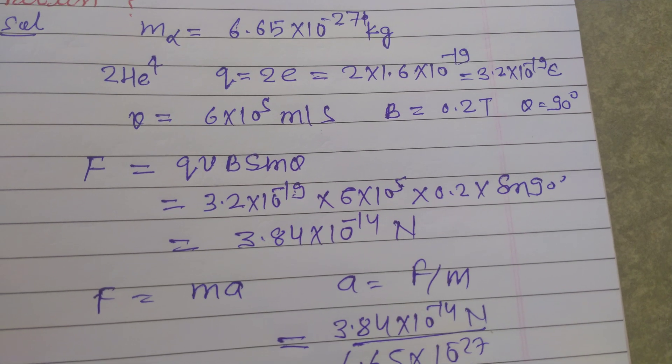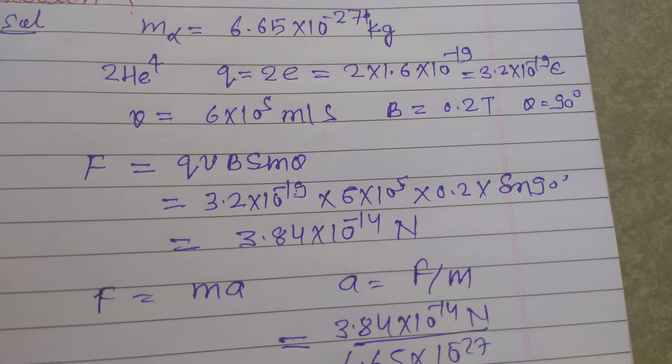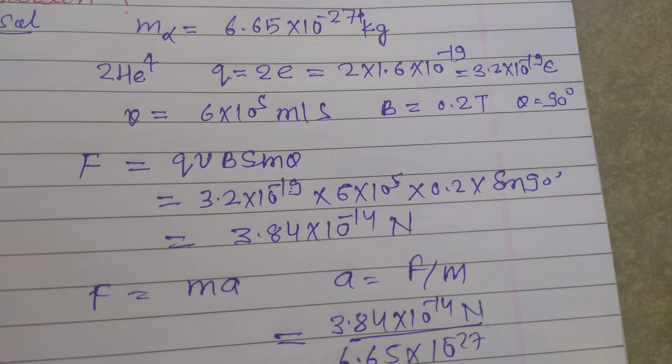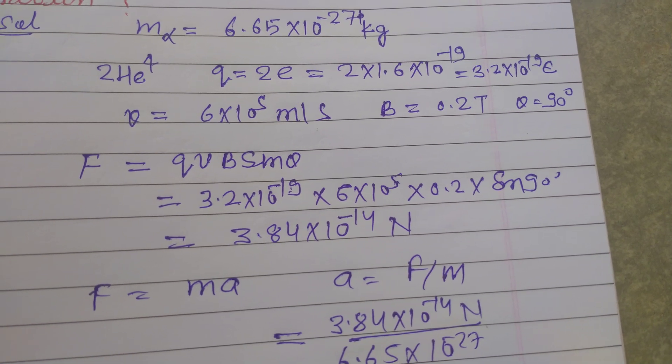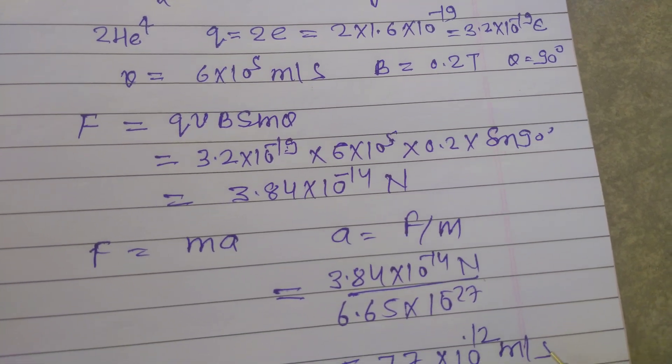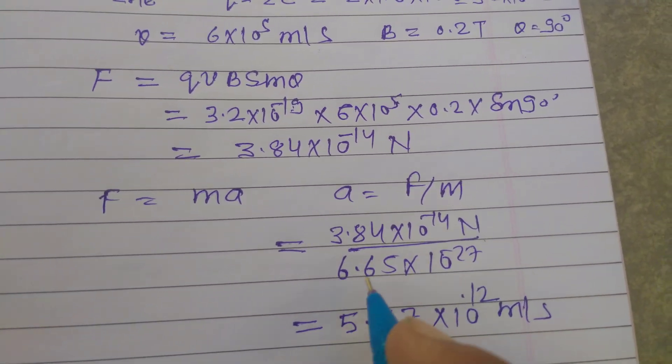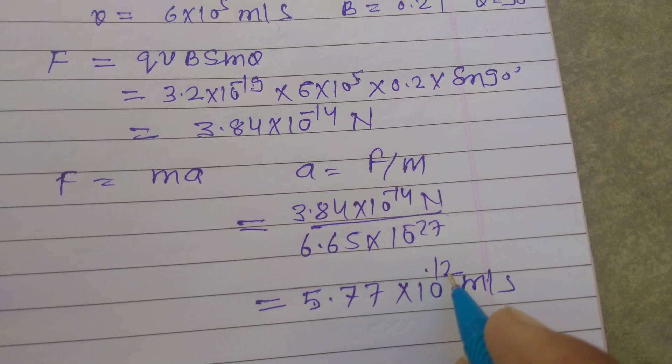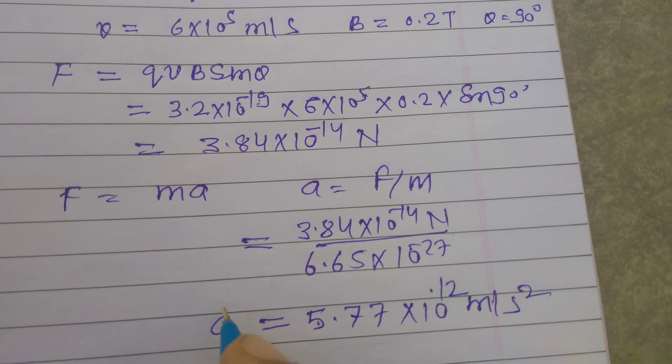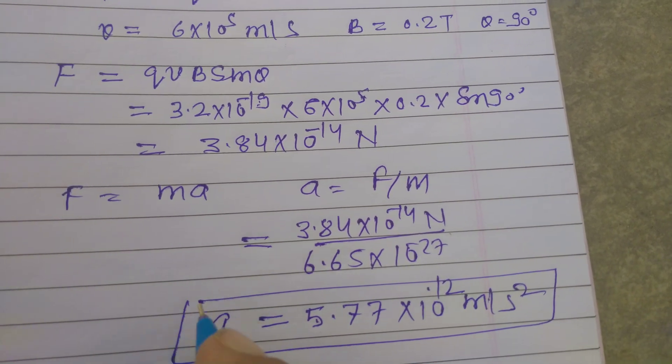On division, we get 5.77 × 10^12 meters per second squared. This is the acceleration of the alpha particle in the magnetic field.